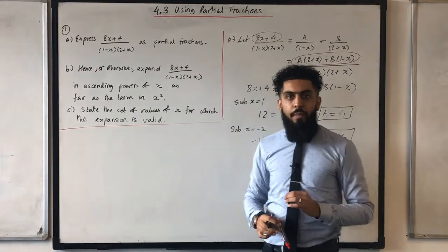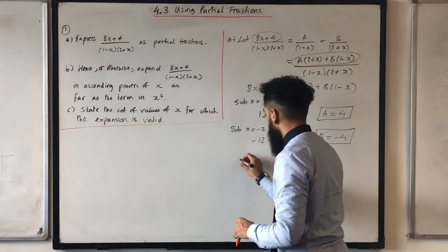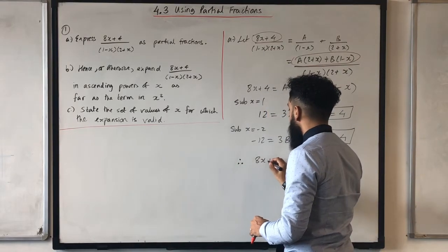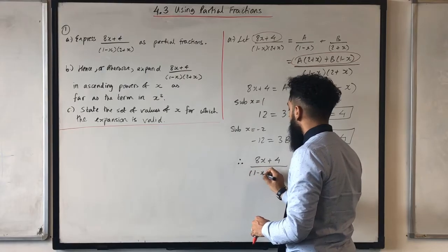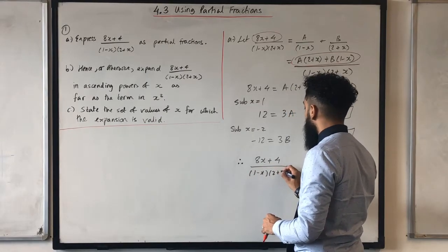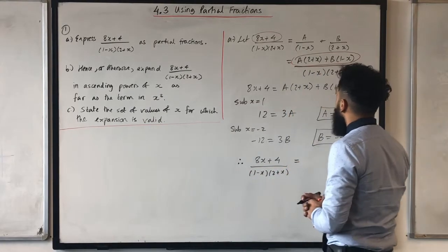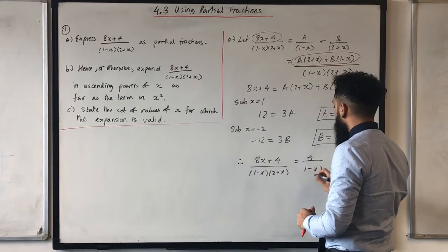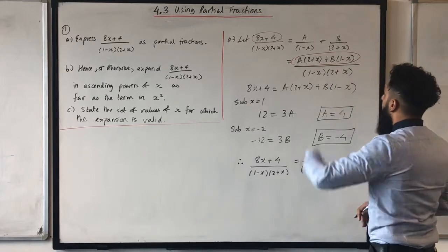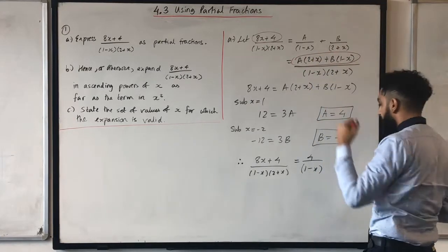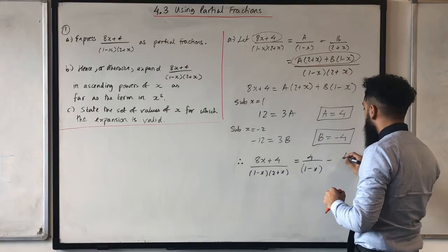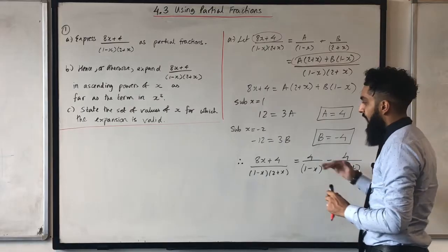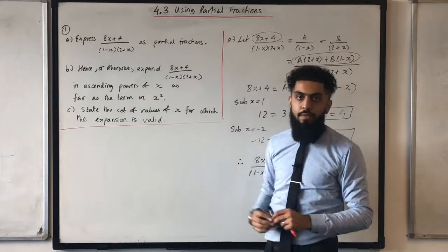To get the final mark I can write: therefore, 8x plus 4 over (1 minus x)(2 plus x) equals 4 over (1 minus x) plus minus 4 over (2 plus x), which I can write as minus 4 over (2 plus x). That completes part A of the question.